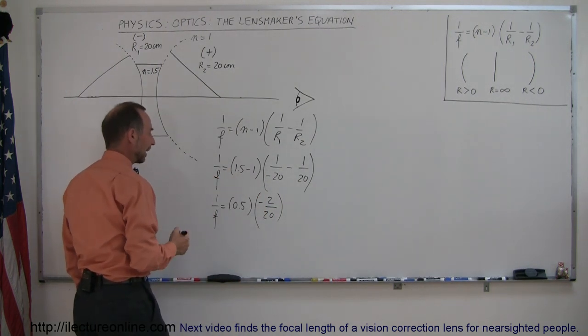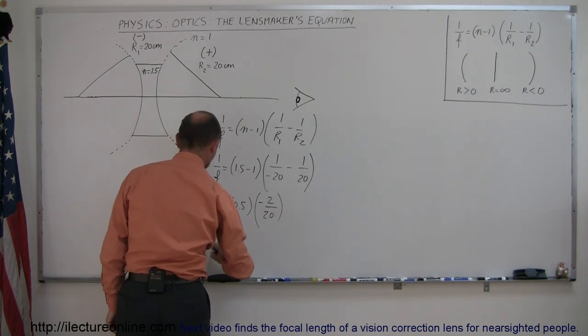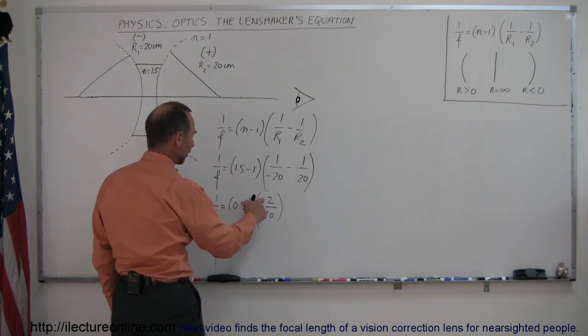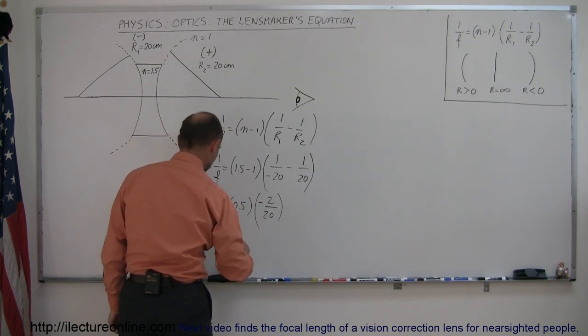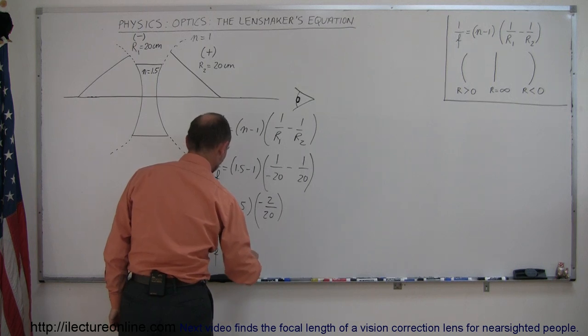And of course, that's like negative 1 over 10, so we have 1 over F is equal to—let's multiply this times that—so 0.5 times 2 is 1. So that's a minus 1 over 20.